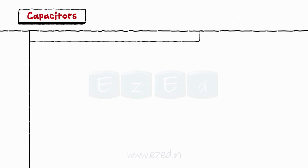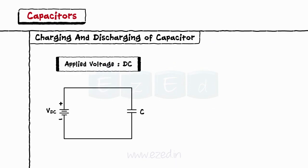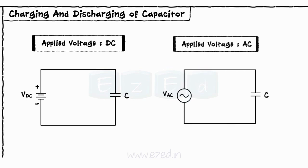Now, let's study the most important phenomenon, charging and discharging of a capacitor. We divide this concept into two parts: when applied voltage is DC and when applied voltage is AC.